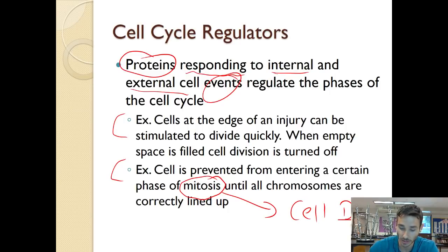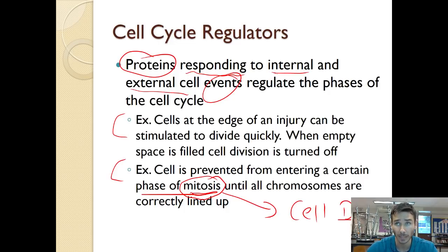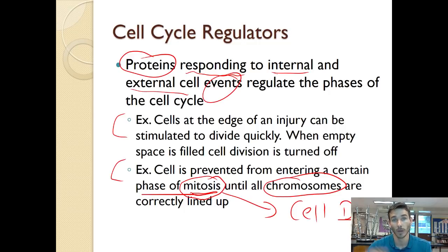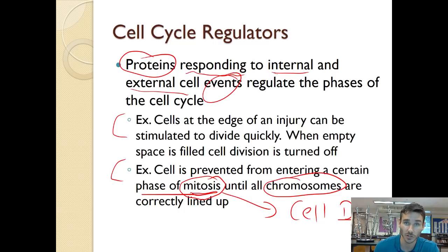Cell division is called mitosis — a term you should know. When a cell divides, it needs to make sure the DNA is copied and split evenly between the two daughter cells. If the chromosomes don't line up correctly during division, the cell will stop the process, because misalignment would result in the wrong number of chromosomes — too much DNA in one cell and not enough in the other. The proteins will recognize that issue and stop the cells from dividing.